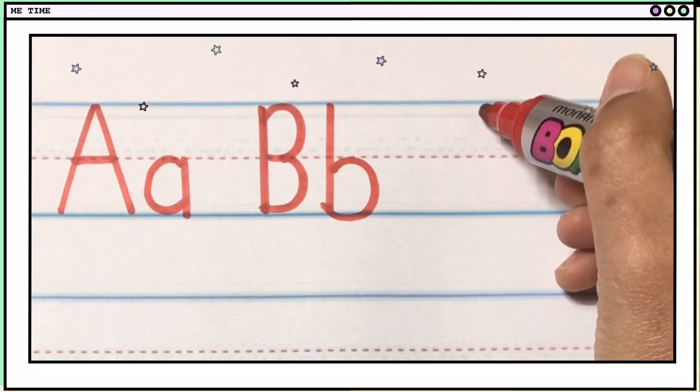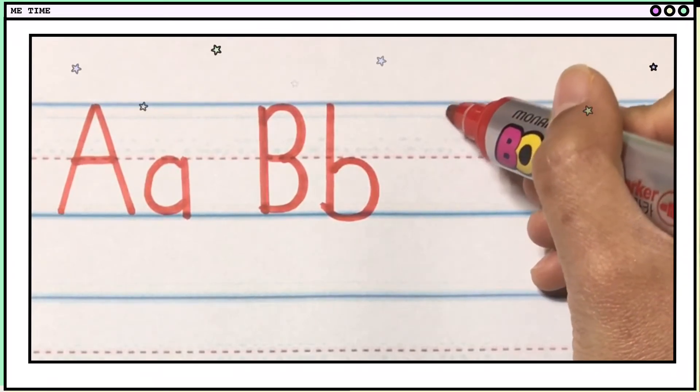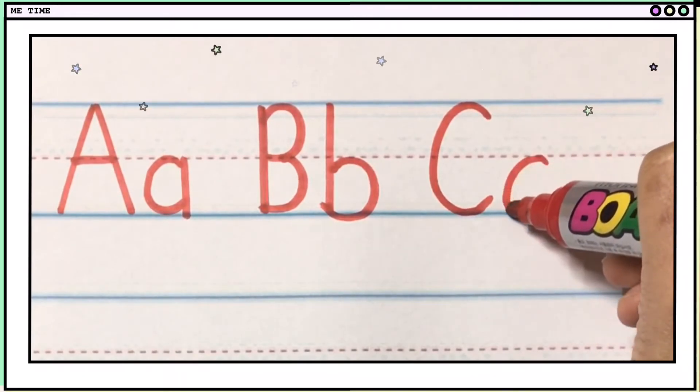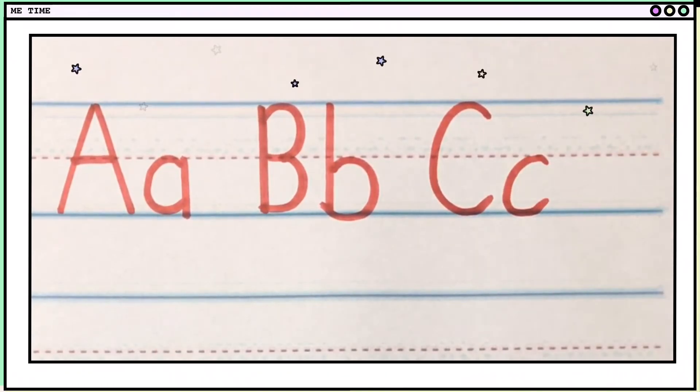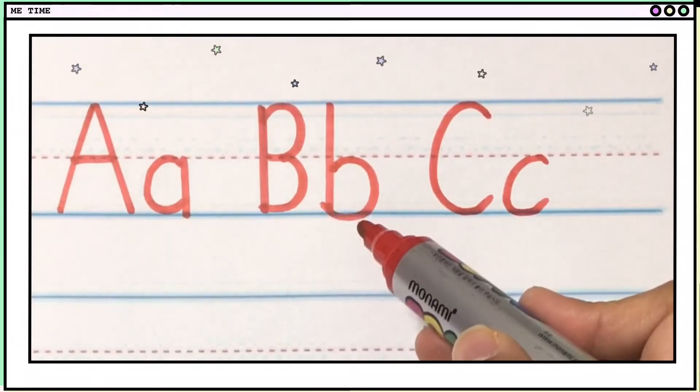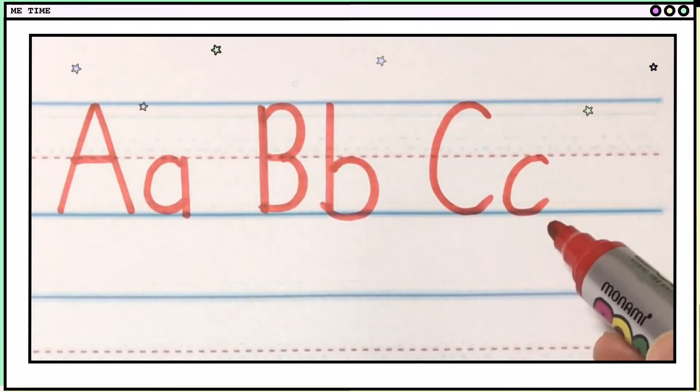Next is big C. It's very easy. You just need to draw like this. And also, small C is the same. Did you get that? Okay. Big A, small A. Big B, small B. Big C, small C.